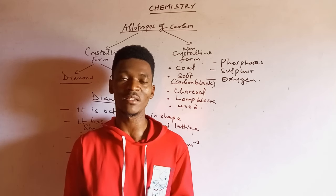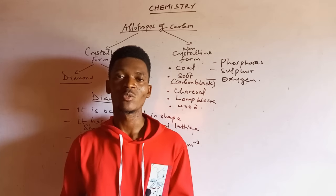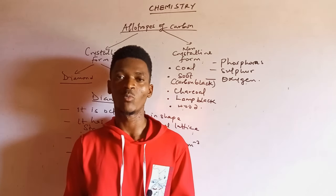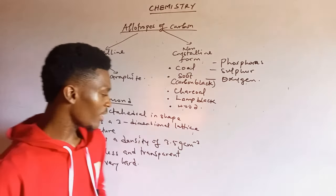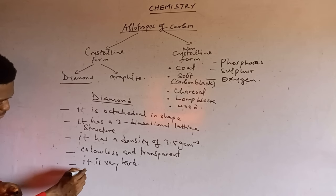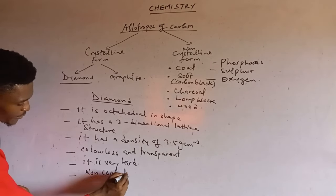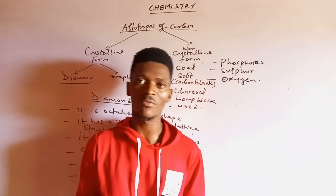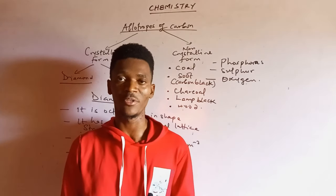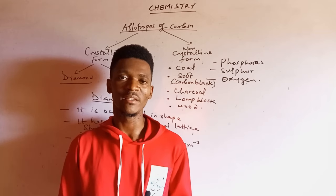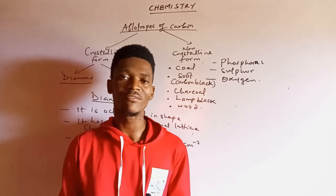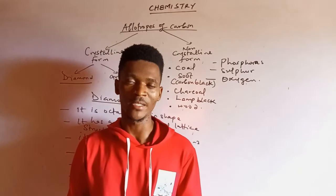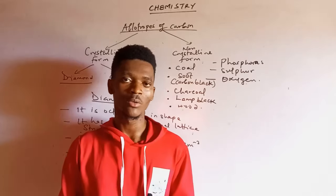Diamond is certainly very hard to the point that it is thermally very stable. When you subject diamond to a very high temperature of about 2,500 degrees Celsius, that's when you start seeing changes. Diamond is also a non-conductor of electricity because its valence electrons — all four of them — are actively involved in bond formation, so there are no free or mobile electrons to carry electric current.